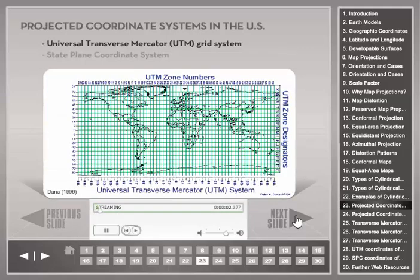Projected coordinate systems are built on map projections and provide a convenient way to describe a point location in rectangular coordinates. Both the Universal Transverse Mercator grid system and the state plane coordinate system are commonly used coordinate systems on maps in the US. In the UTM grid system, the area between 84 degrees north and 80 degrees south employs a series of 60 zones covering the whole world. Each zone uses the transverse Mercator projection. Zones are numbered from 1 to 60 from west to east, with each zone 6 degrees wide in longitude. The division into 60 zones warrants an overall mapping accuracy of one part in 2500.